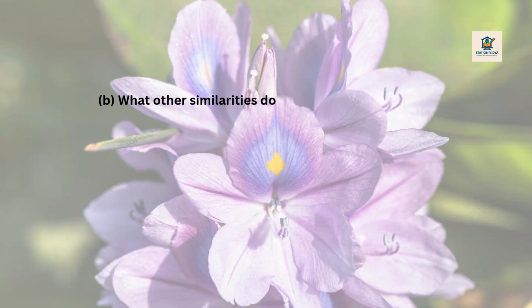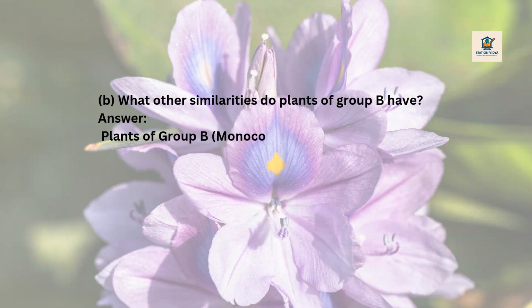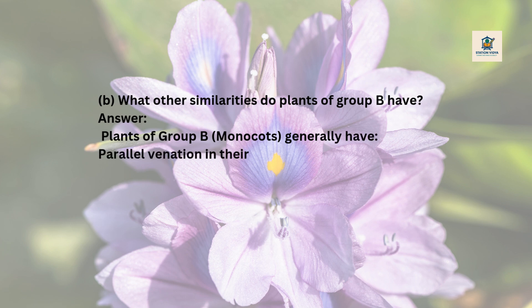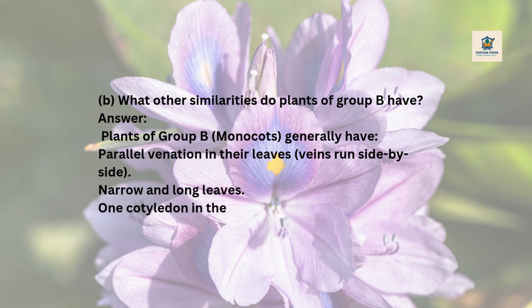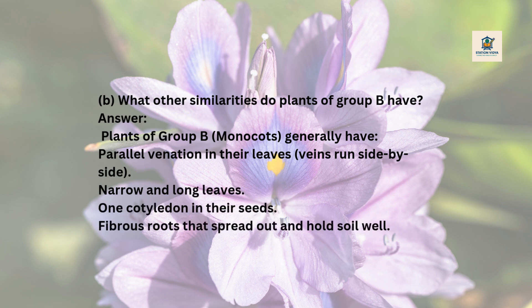What other similarities do plants of group B have? Answer: Plants of group B (monocots) generally have parallel venation in their leaves (veins run side by side), narrow and long leaves, 1 cotyledon in their seeds, and fibrous roots that spread out and hold soil well.